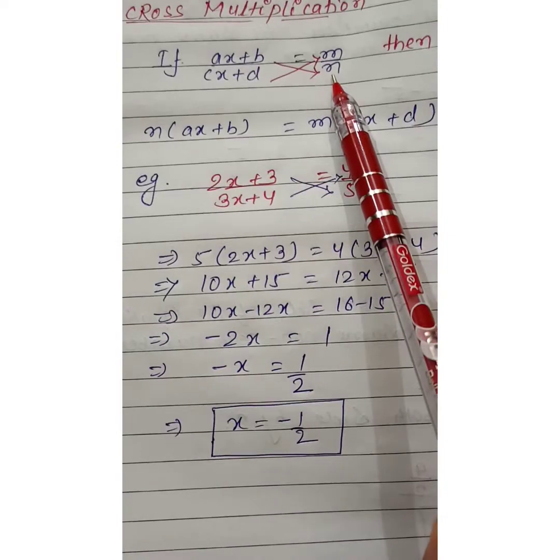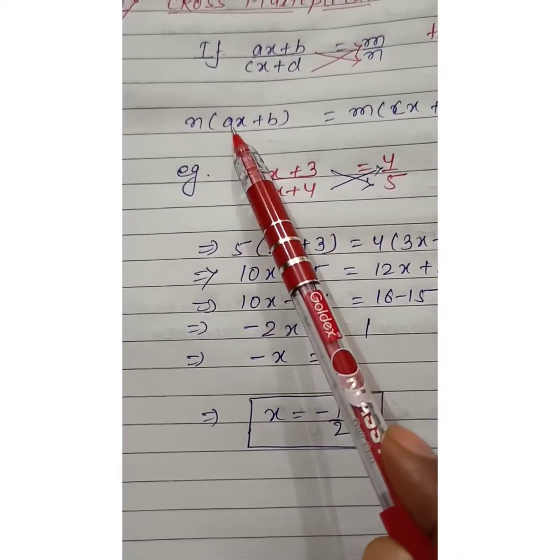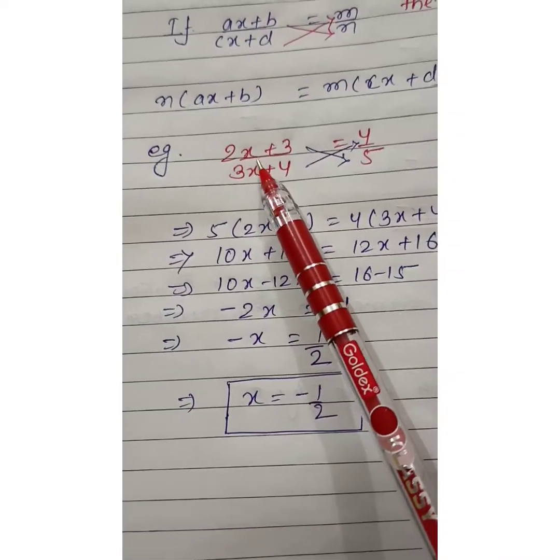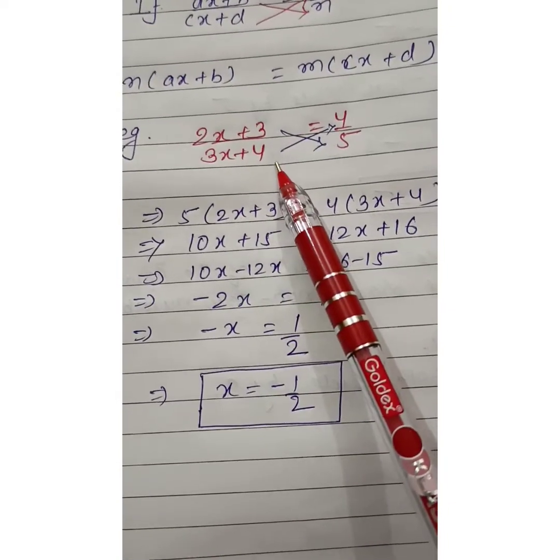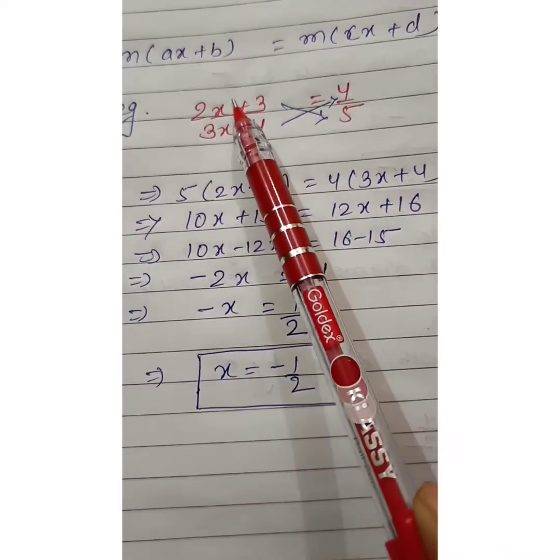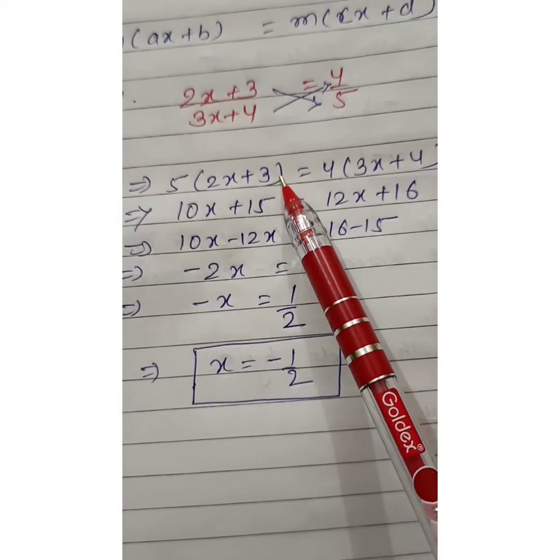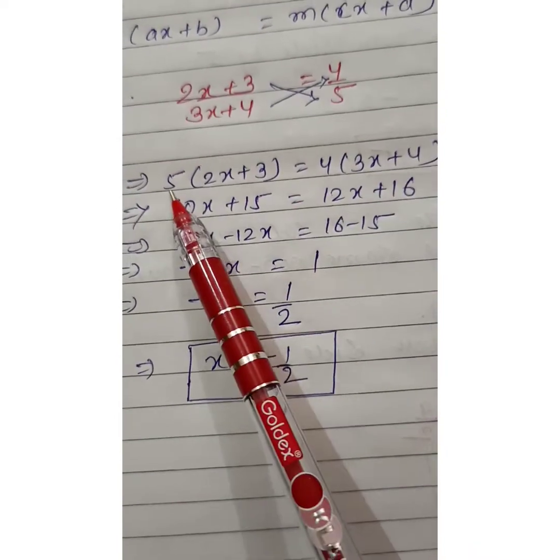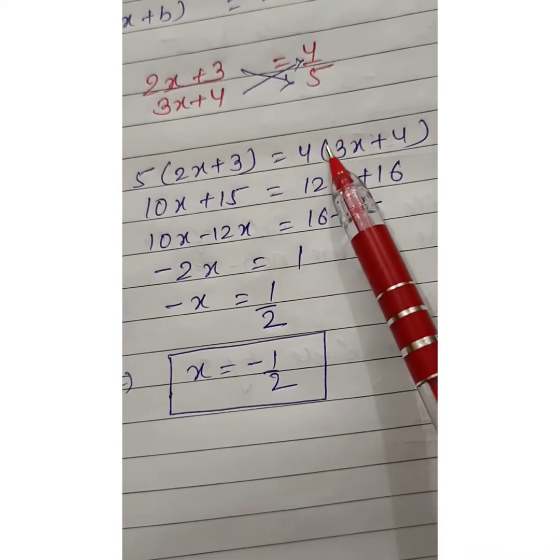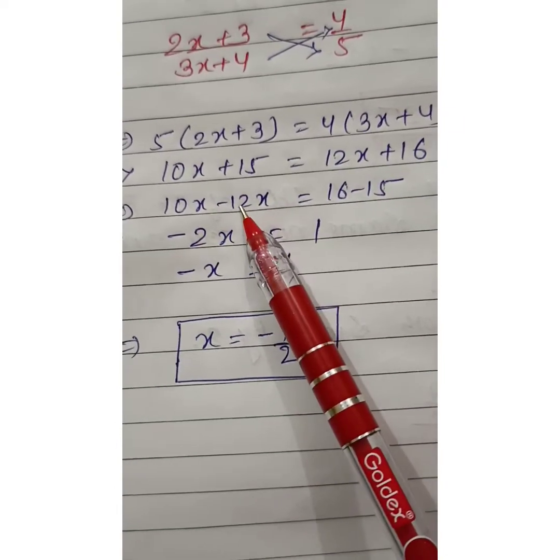Here example is (2x plus 3) by (3x plus 5) equals 4 by 5. Using cross multiplication, 5 multiplies here and 4 multiplies here. 5(2x plus 3) equals 4(3x plus 5). 10x plus 15 equals 12x plus 16.